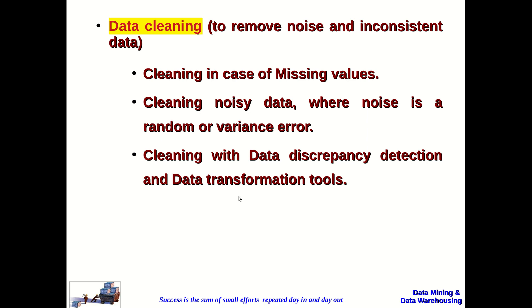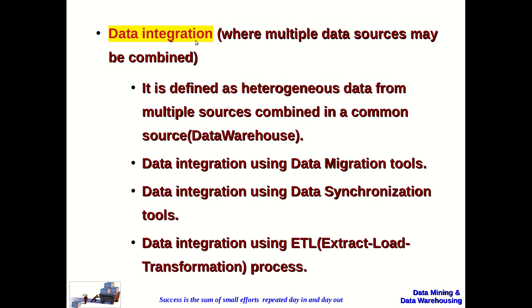Once the data is cleaned, it goes to the next step: data integration. Here, multiple heterogeneous data sources will be combined. Data integration can be defined as heterogeneous data from multiple sources combined in a common source, which you call the data warehouse — as we have already seen in the data warehouse back-end process. Data integration uses a migration tool, a synchronization tool, or the ETL (Extraction, Loading, and Transformation) process.